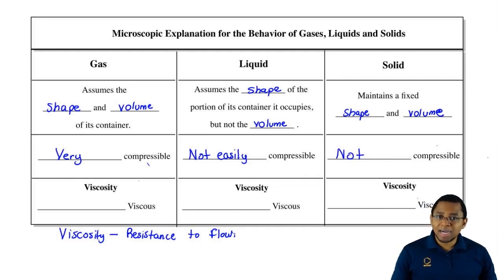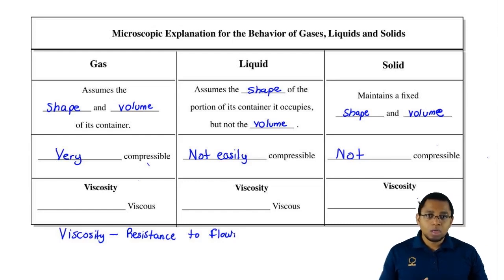If we took that bucket of honey though and we tipped it over, we would say that honey is more viscous. Honey moves very slowly. It wouldn't be able to dump all of the contents onto the person's head. It would move very slowly. If you move very slowly, you're viscous.